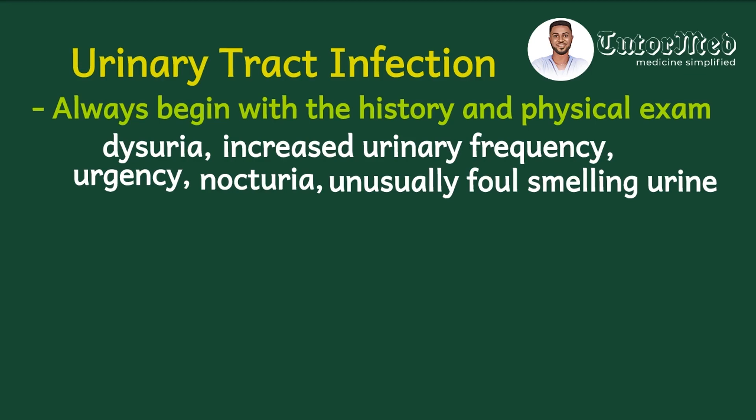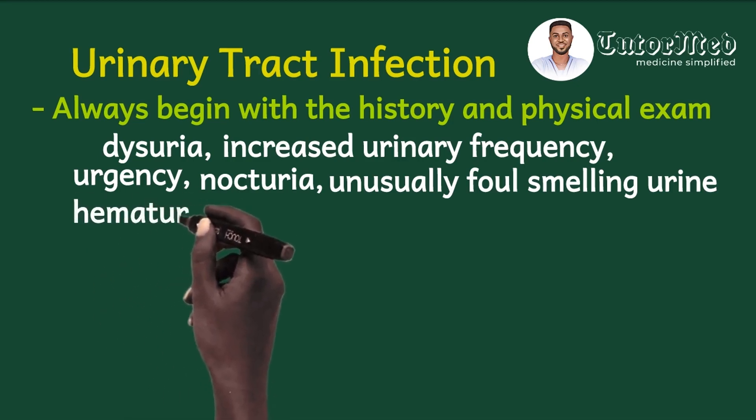This reminds me of a patient with BPH who had retention, had stayed at home for a very long time, and had developed sepsis because he had developed a UTI. We tried passing a catheter but were unsuccessful, so we had to drain the urine trans-abdominally — a procedure called suprapubic cystostomy. The urine that came out was very pungent, confirming that an unusually foul-smelling urine may indicate UTI.